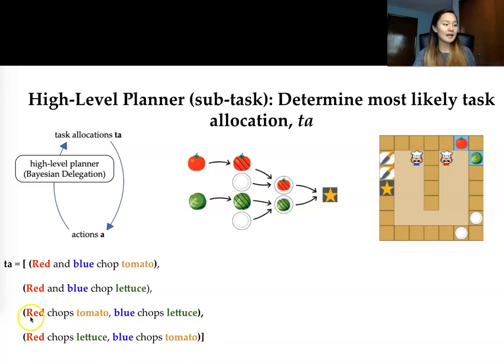The last two where the red agent chops the tomato and blue chops the lettuce or vice versa is an example of our divide and conquer challenge where we're doing different subtasks.